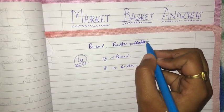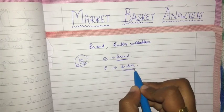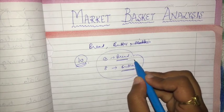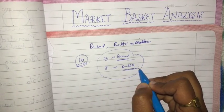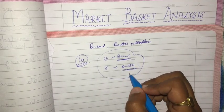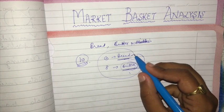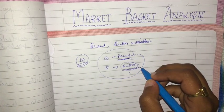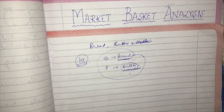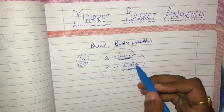We see that those who bought bread also bought butter. Based on analysis of previous transactions, all those persons who have taken bread have also purchased butter. Obviously, they're not going to eat raw butter — they're going to first apply butter on bread and then eat it. That is the market basket analysis: bread is leading to the purchase of butter.